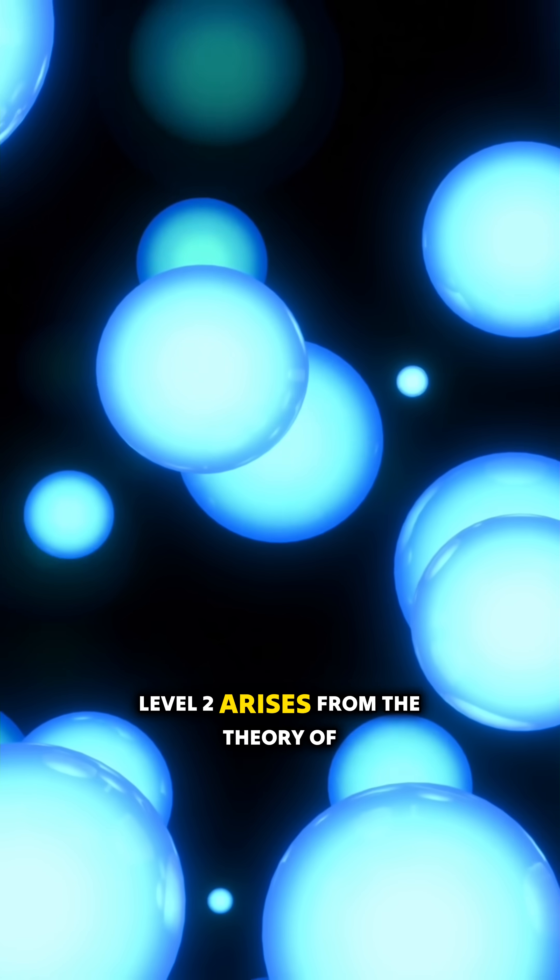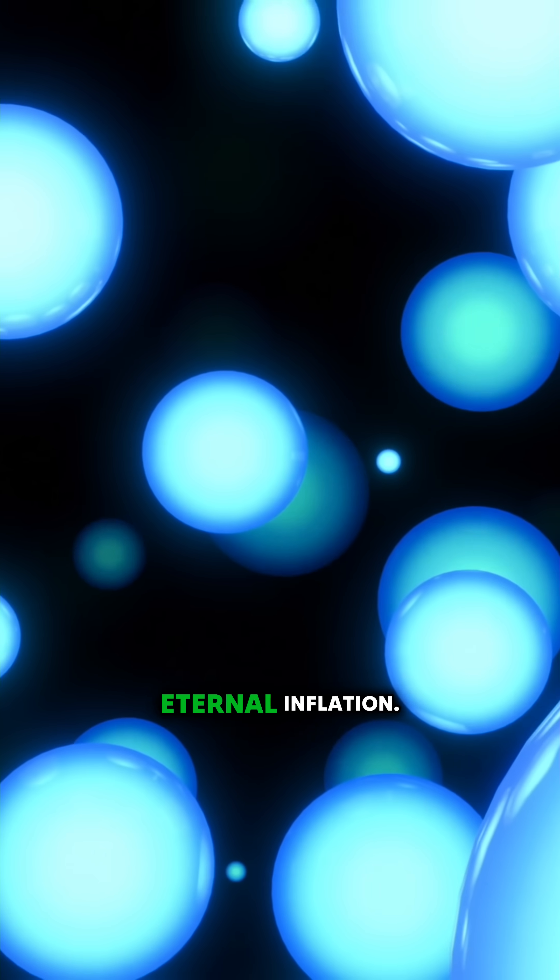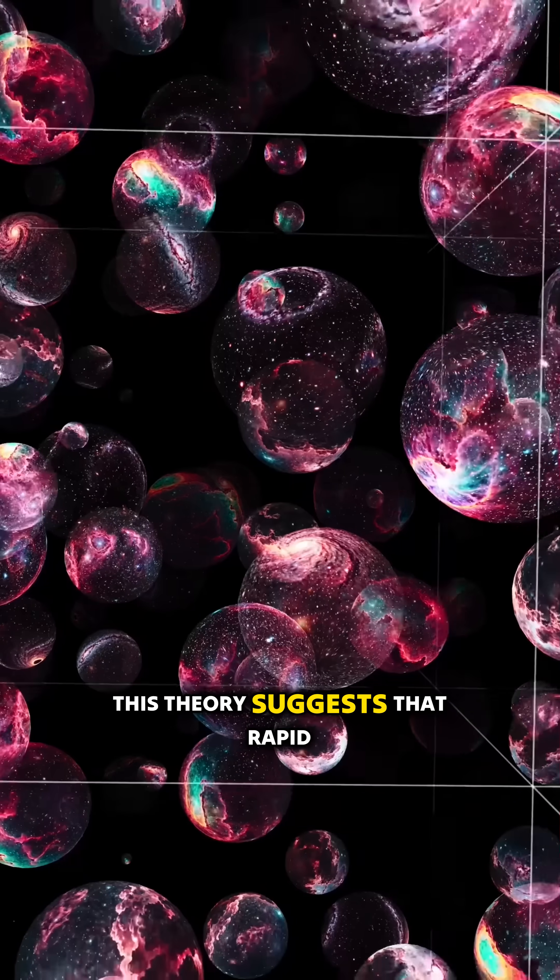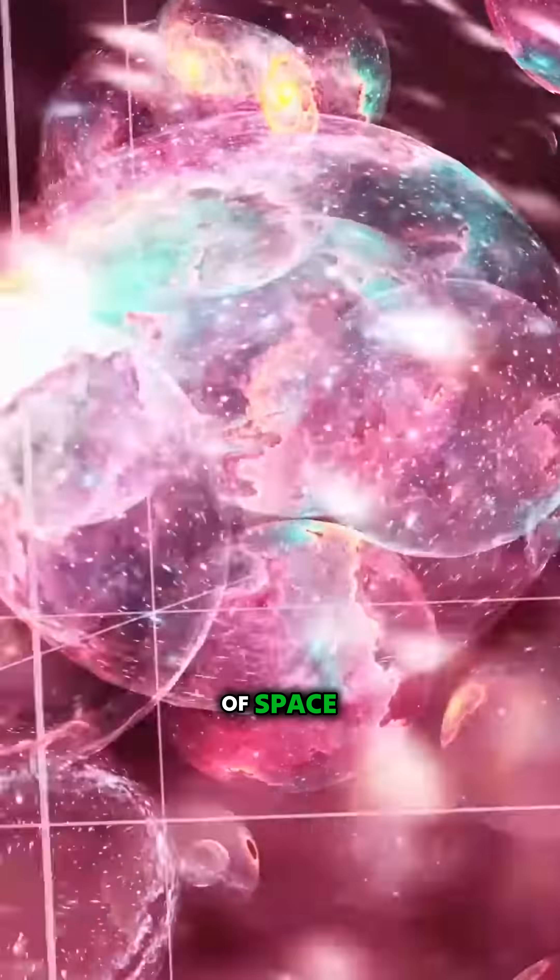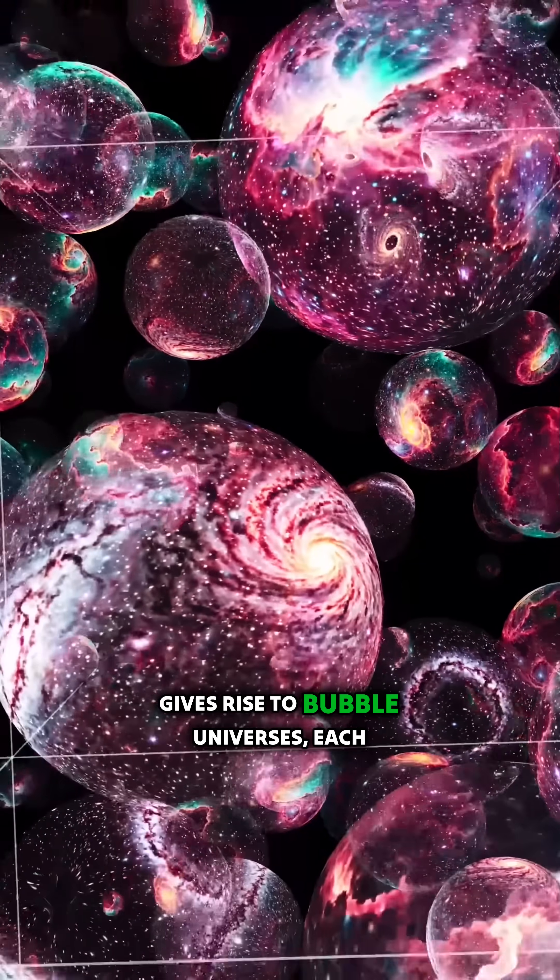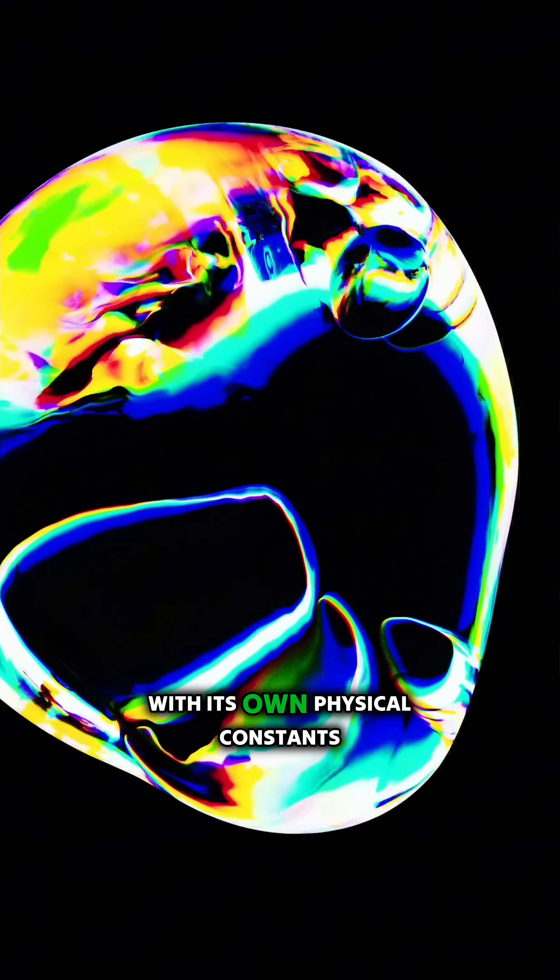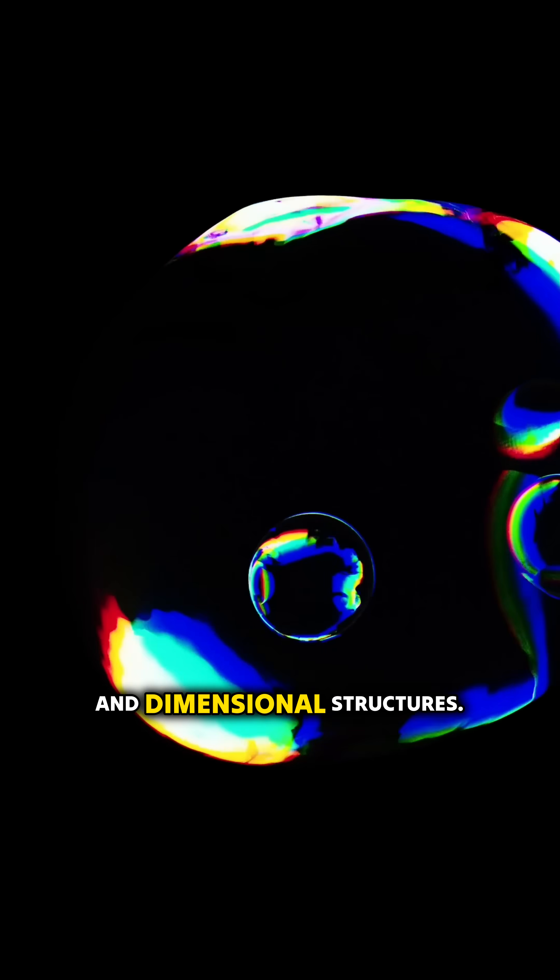Level two arises from the theory of eternal inflation. This theory suggests that rapid expansion of space gives rise to bubble universes, each with its own physical constants and dimensional structures.